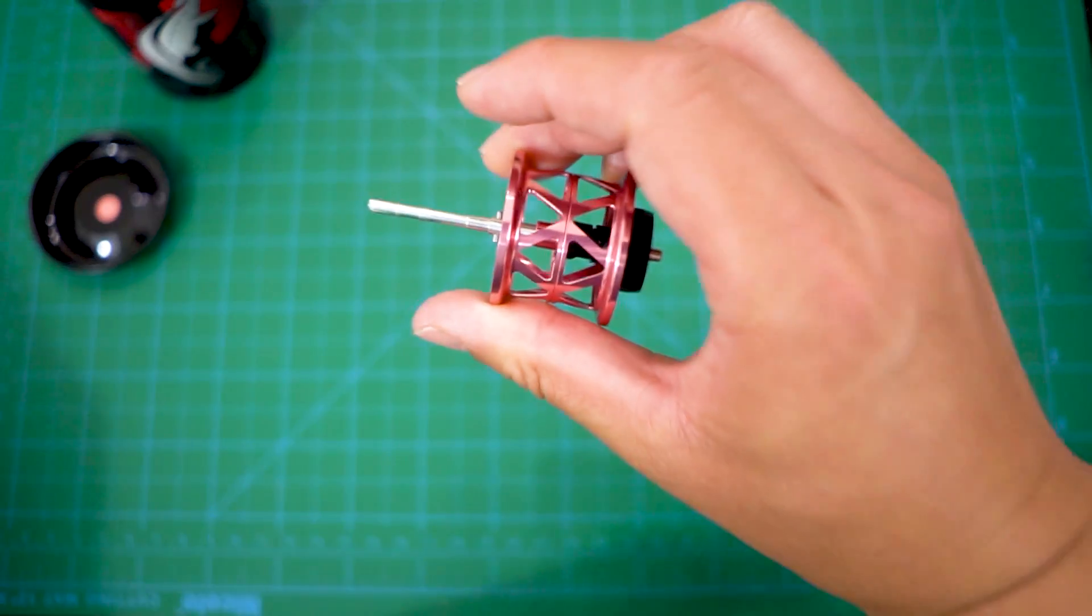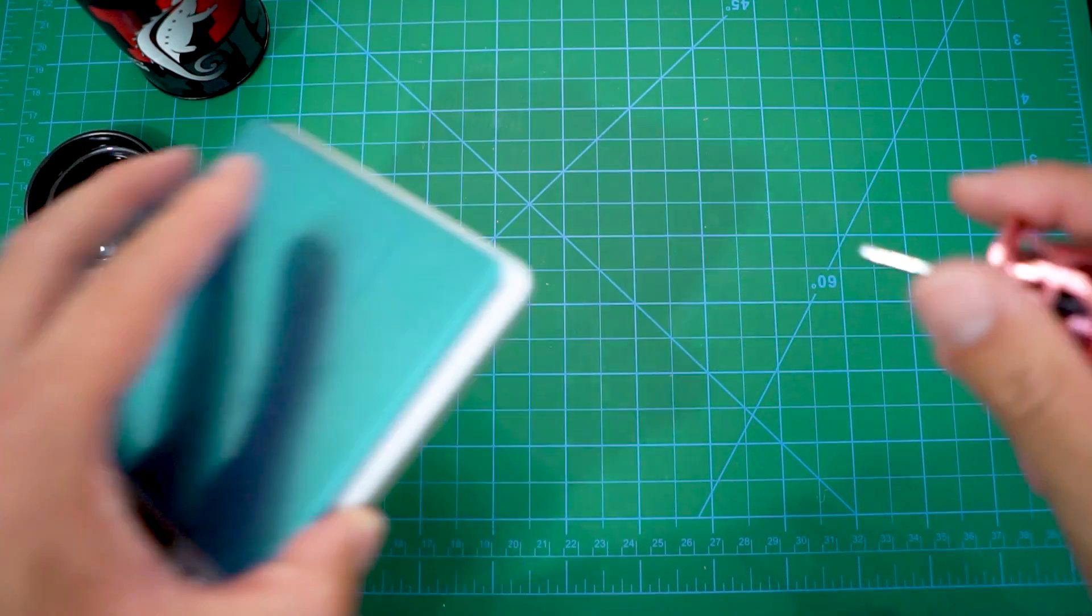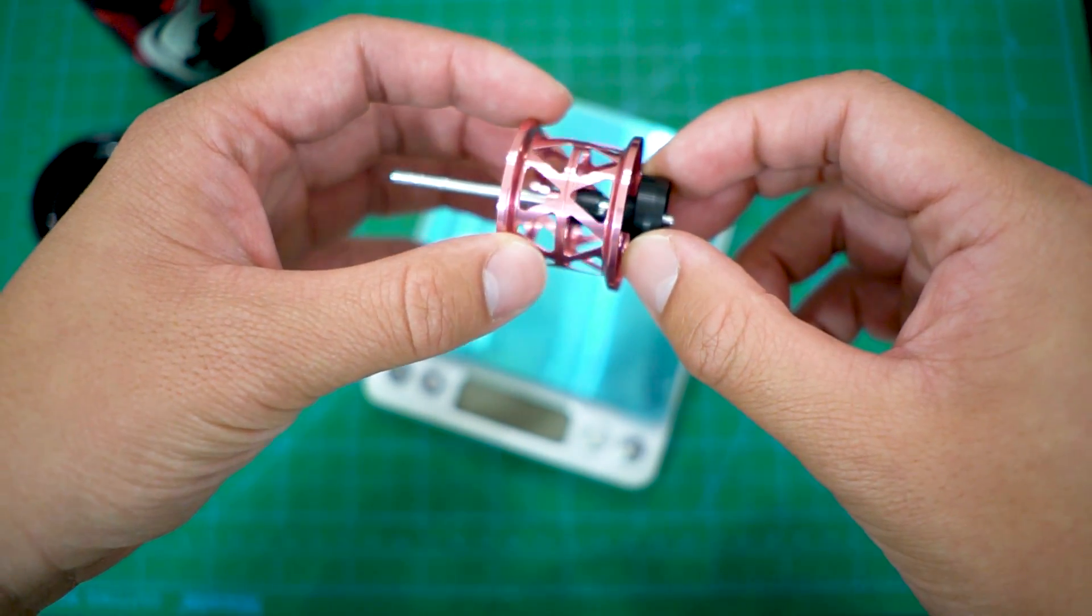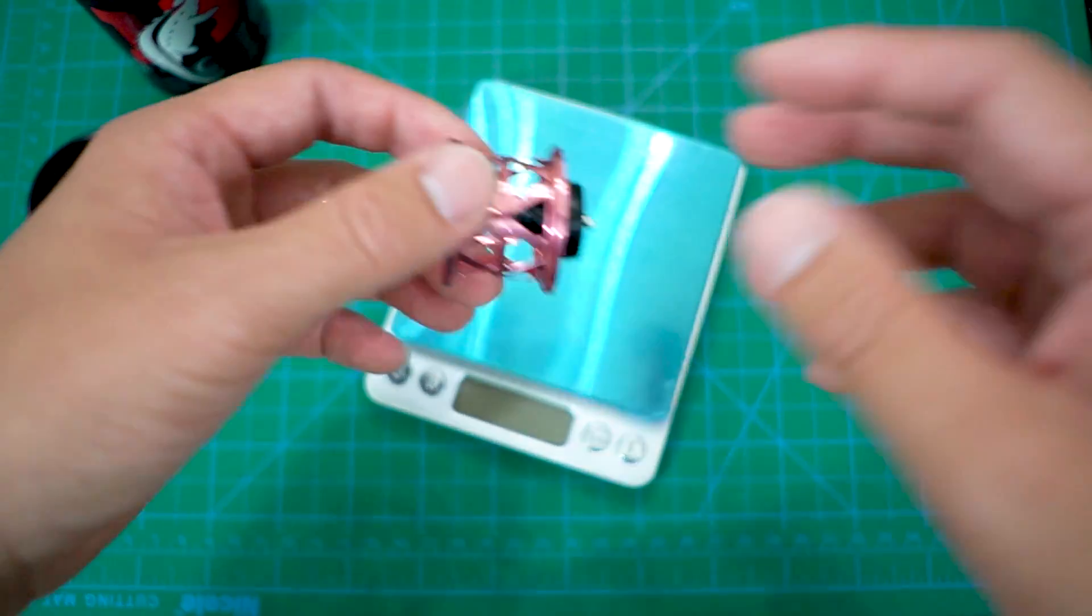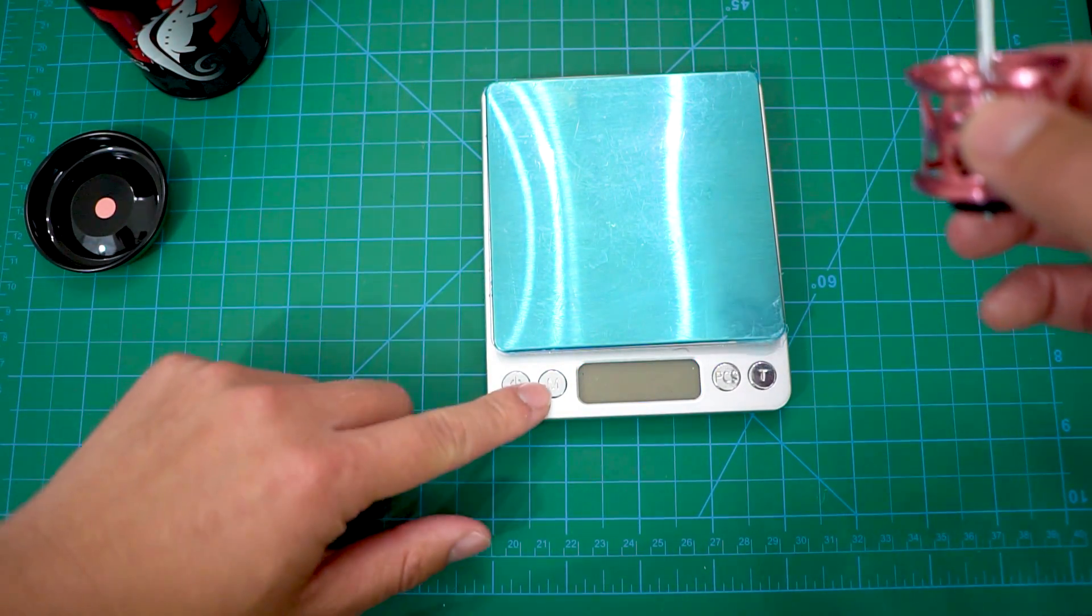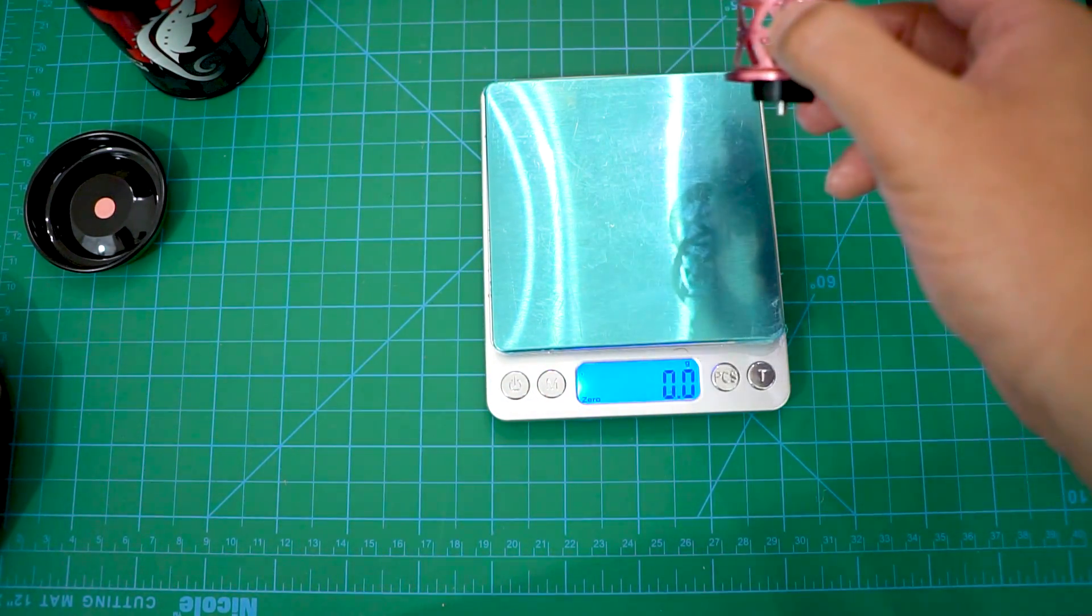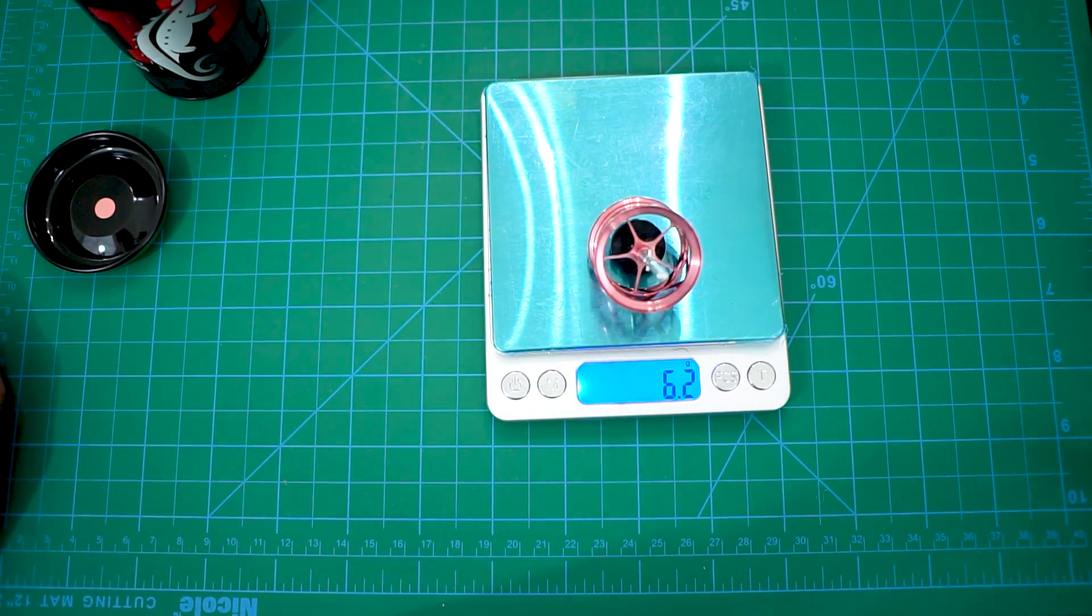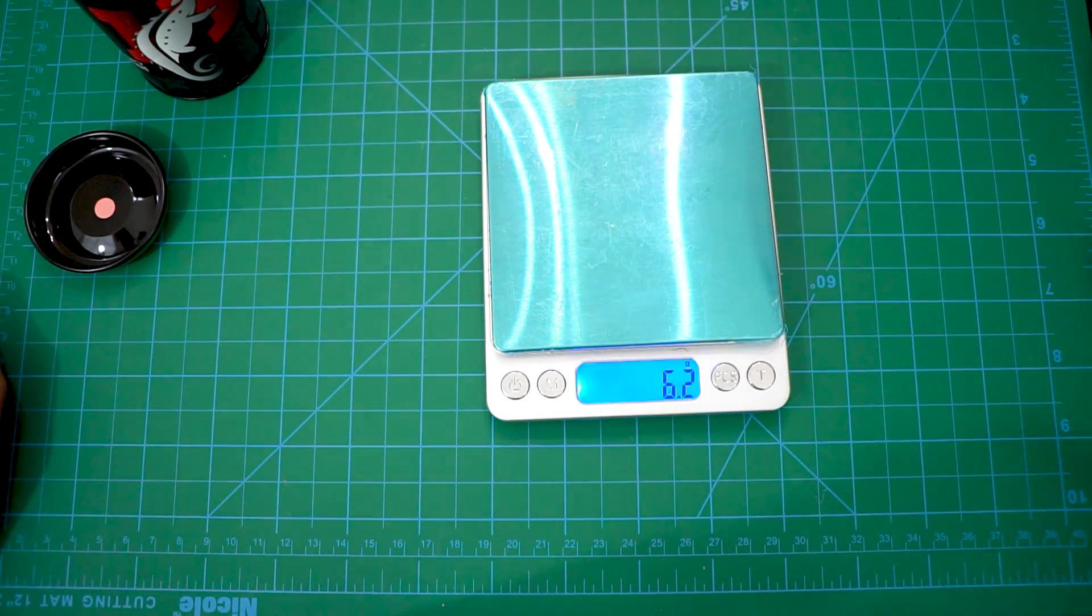But anyway enough about those reels. We'll be focusing about this guy here and I'm very excited. I'm hoping that this could be my first BFS spool for my Tatula that actually works. So yeah, let's first weigh this. Oh what the heck happened. It's on grams right. All right, zeroed out. Put it right in the center. 6.2. Look how light that is. Holy smokes.